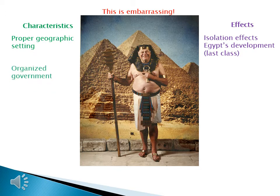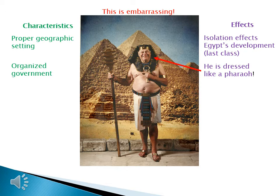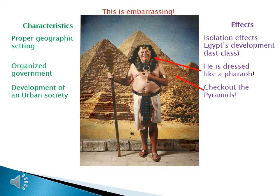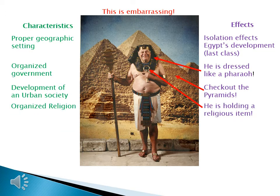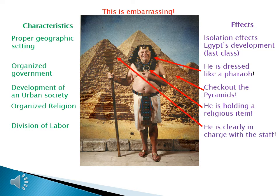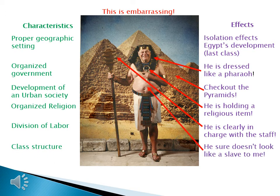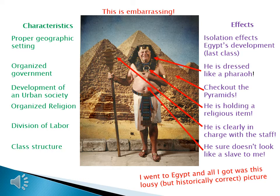We also learned that organized government is a characteristic of civilization. He's dressed like a pharaoh, and we know that pharaohs are in charge of Egypt. How about the development of urban society? Check out those pyramids — we have sophisticated buildings. How about organized religion? He is holding a religious item, an ankh, right next to his chest. Division of labor? He's clearly in charge with that staff — the Staff of Ra. And our last characteristic, class structure? He sure doesn't look like a slave. So I guess we could title this picture: 'I went to Egypt and all I got was this lousy but historically correct picture.' Let's move on and look at the details of the effects of Egyptian civilization.